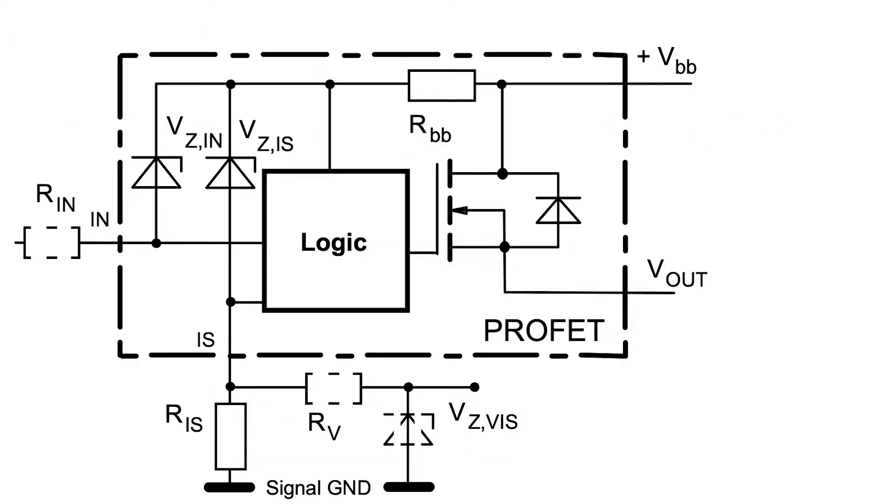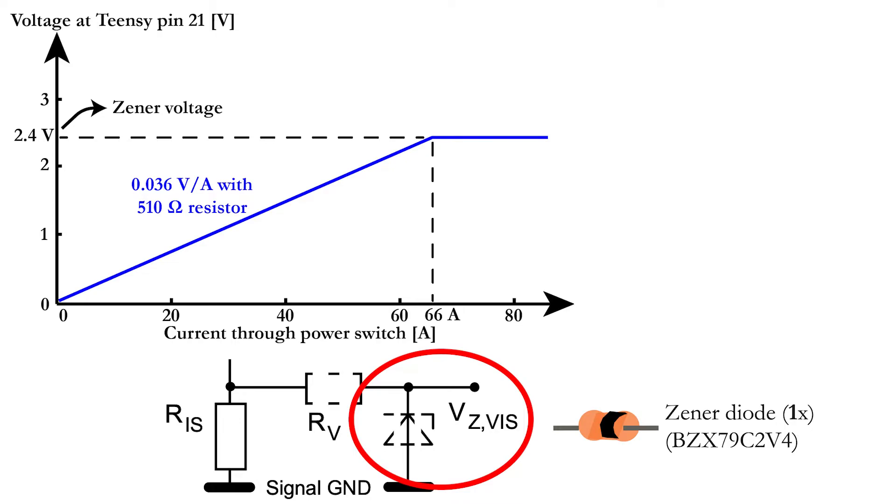A Zener is a special diode that does not conduct any current below a certain fixed voltage, called the Zener voltage. For this project, you will use a diode that has a Zener voltage of 2.4 volts, which is well below the maximal input voltage of the Teensy pins.